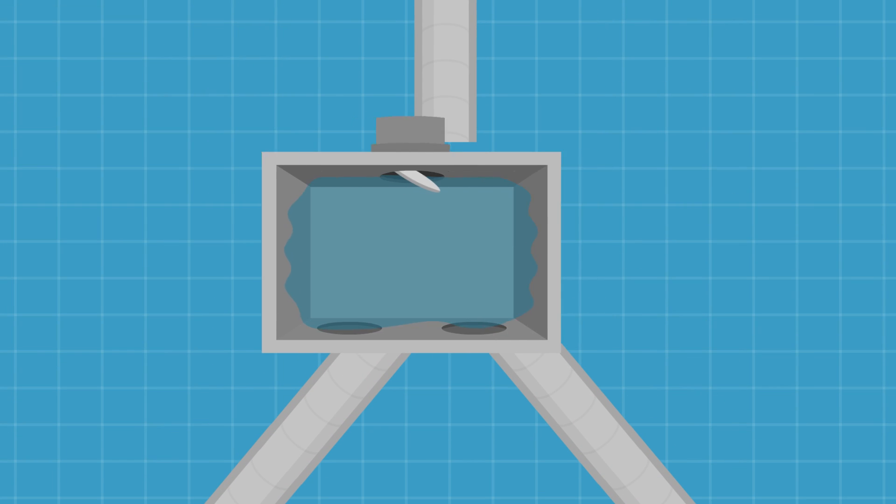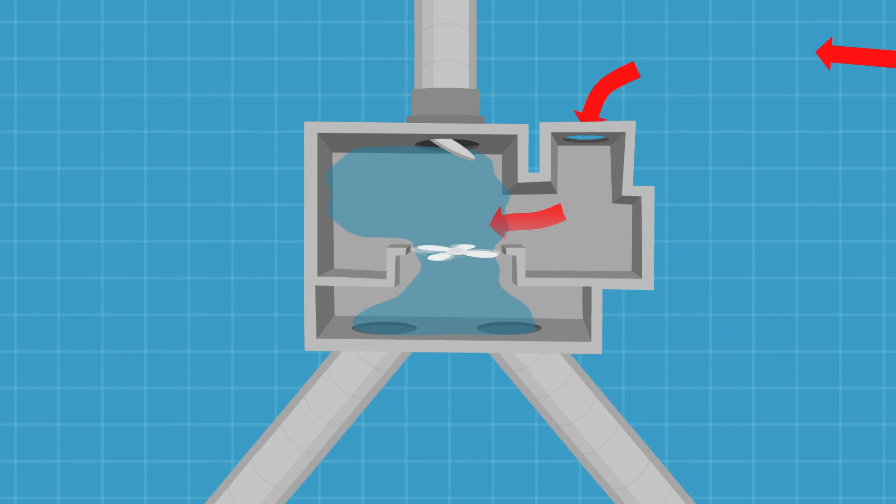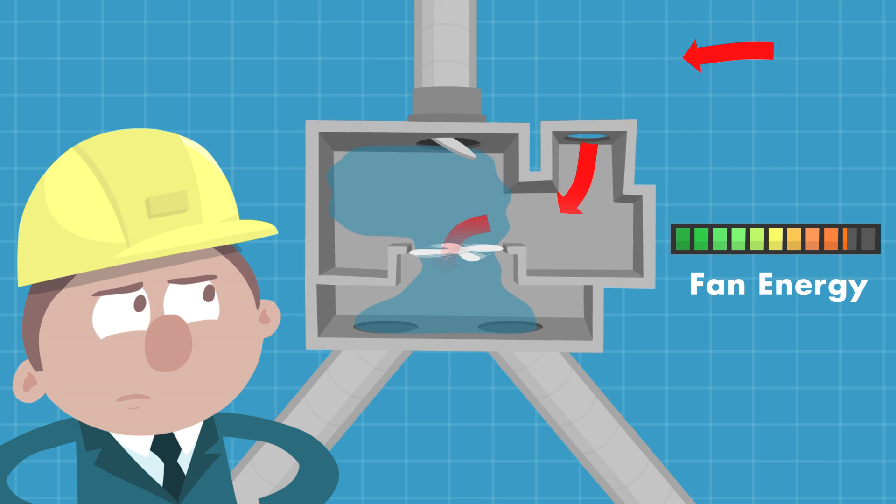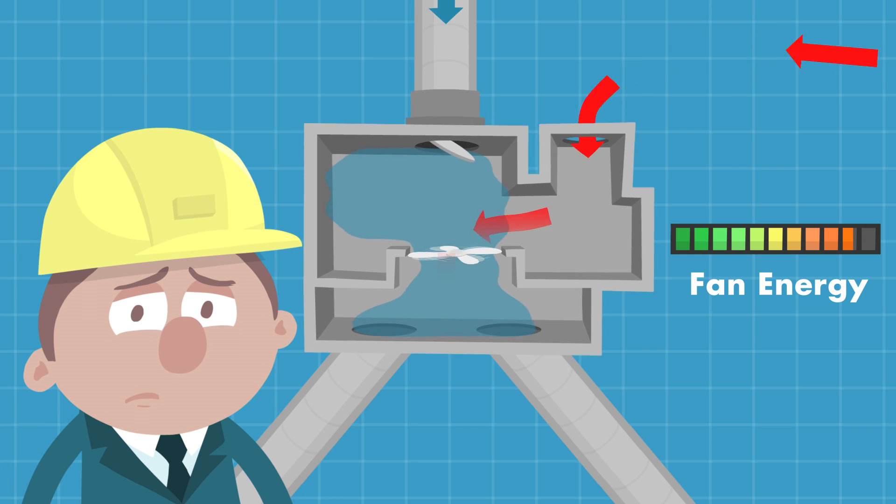The old solution is to swap the VAV boxes for fan-assisted units which mix primary air with ceiling cavity air. But now we're using noisy power-hungry fans again. Not good, right Albert?